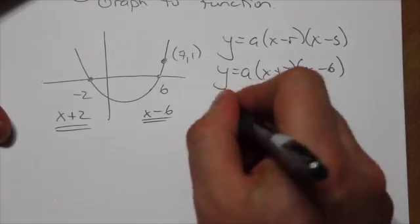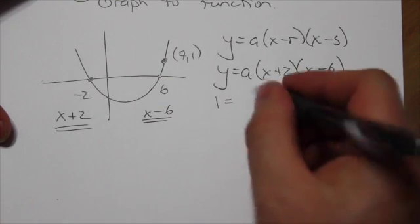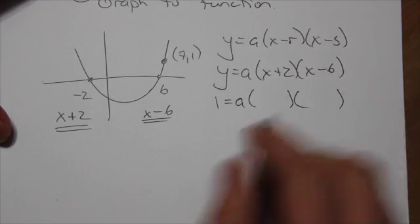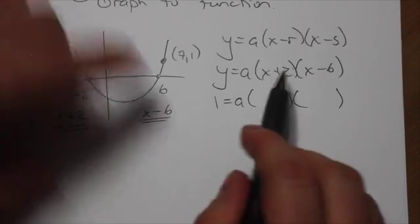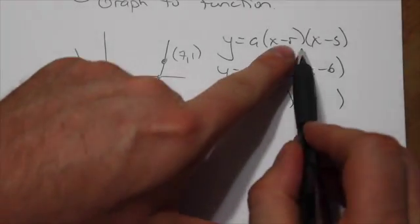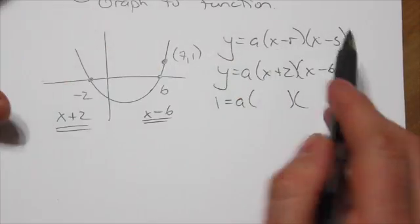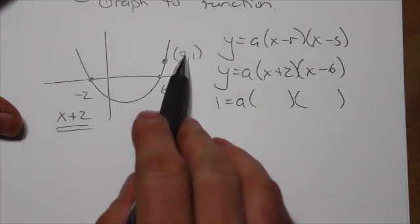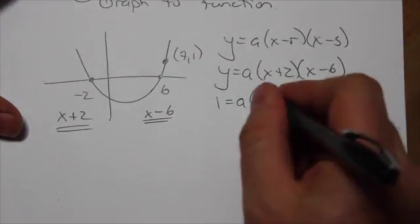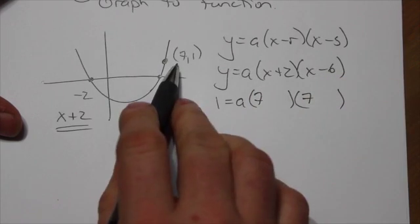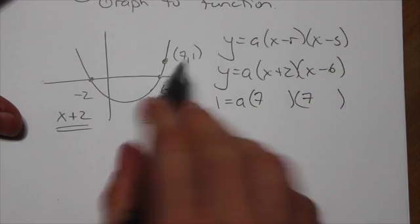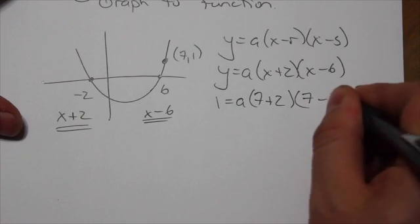So I'm going to plug 1 in for the y. And now this next bit of substitution here sometimes throws people off. Remember, the x-intercepts go in for r and s. It's this other point that goes in for x. So both of these x values here are going to come from that 7, and then it'll be plus 2 minus 6.